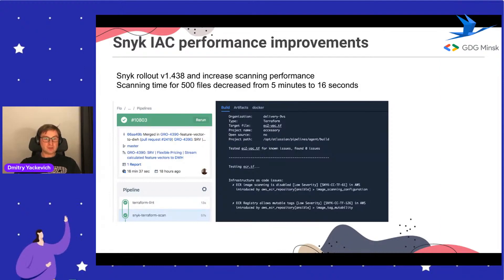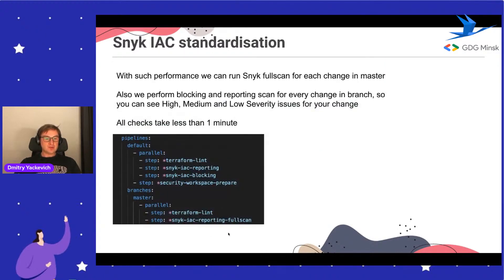When we started scanning the full repository it took about five minutes. But Snyk did a great job improving performance - now it takes about 16 seconds. So we decided to move the full repository security scan to each merge event - when a pull request merges to master, we run a full scan report to see the full picture of our repositories. Also, since we have CI/CD as code, we can apply the same configuration for all Terraform repositories. We have about 20 repositories and all contain reports and blocking checks, giving us the same level of infrastructure policies across all environments.